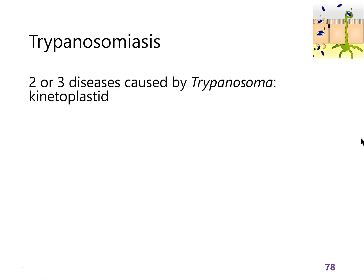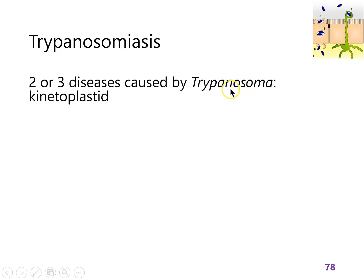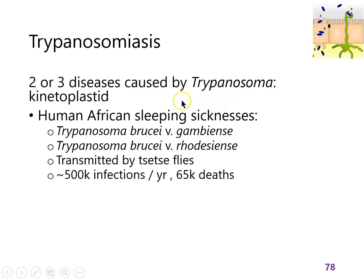I'll say a lot more about trypanosomiasis. Trypanosoma is unrelated to Trichomonas — it is a genus of kinetoplastids. There are really three different diseases caused by members of this genus: two different versions of human African sleeping sickness — an eastern version and a western version that can really be seen as separate diseases — and both are transmitted by tsetse flies. These are horrible diseases that are often fatal.